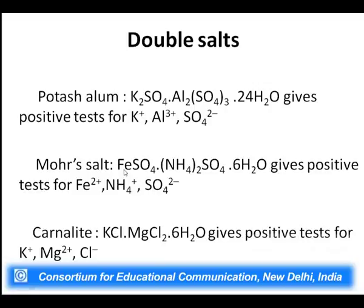Similarly, Mohr's salt is a compound of ferrous sulfate and ammonium sulfate. On mixing them in equimolar ratios, a green colored compound — Mohr's salt — is obtained. But when dissolved in water, it breaks down into ferrous ions, ammonium ions, and sulfate ions. Carnallite is also a double salt of potassium chloride, magnesium chloride, and six water molecules, which similarly gives rise to potassium ions, magnesium ions, and chloride ions in solution, showing a positive test for all three cations.